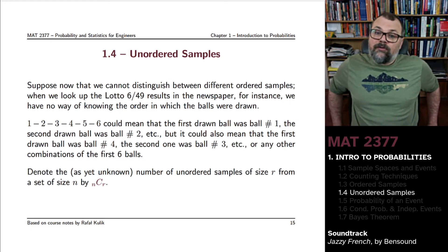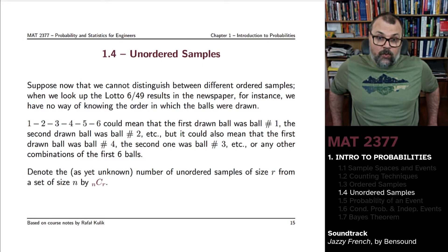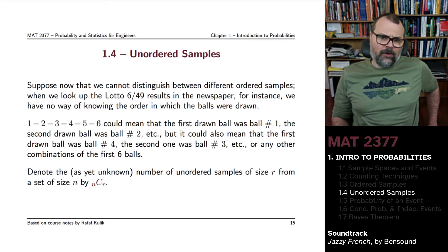So this number of unordered samples of size r from a set of size n, we will denote it by nCr. The C stands for combination, and we'd say something like n choose r to talk about it. We don't yet know what that number is.